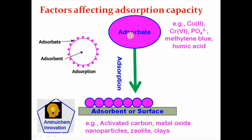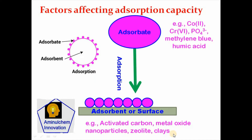Initially you need to understand what is adsorbate. Adsorbate includes cobalt, chromium ions, humic acid, and related species. On the other hand, the adsorbent or surface includes activated carbon, metal oxide, nanoparticles, zeolite, and clays.